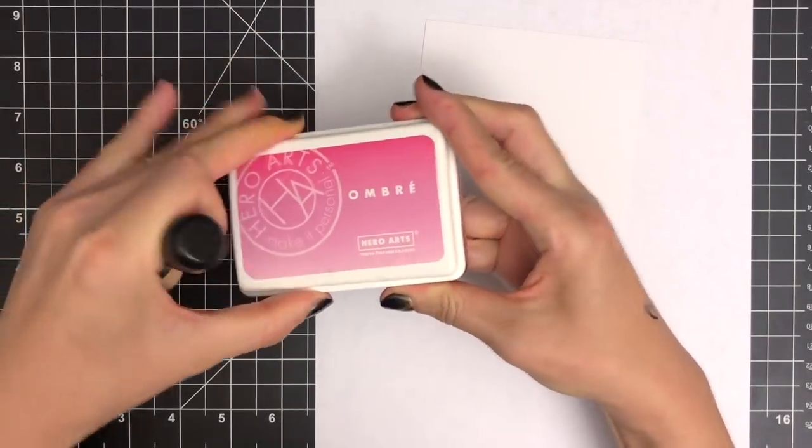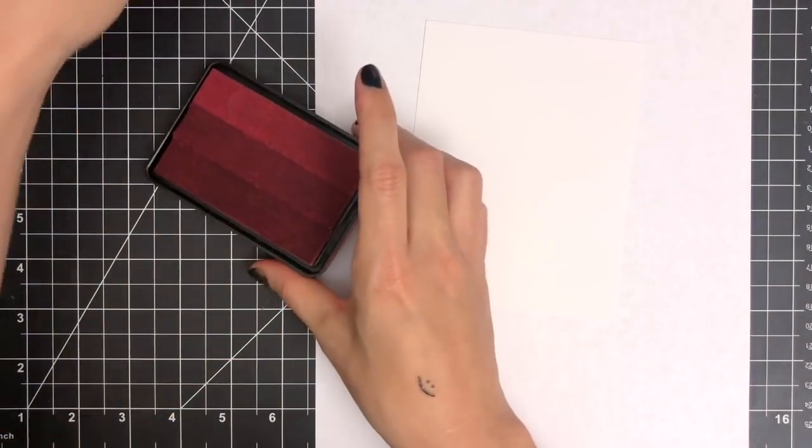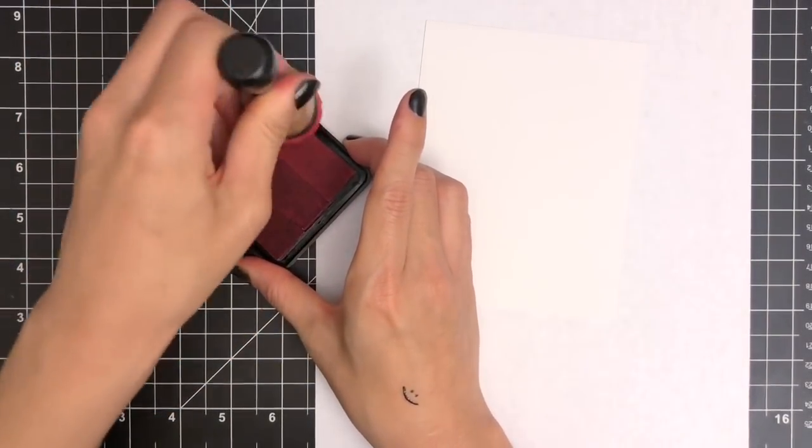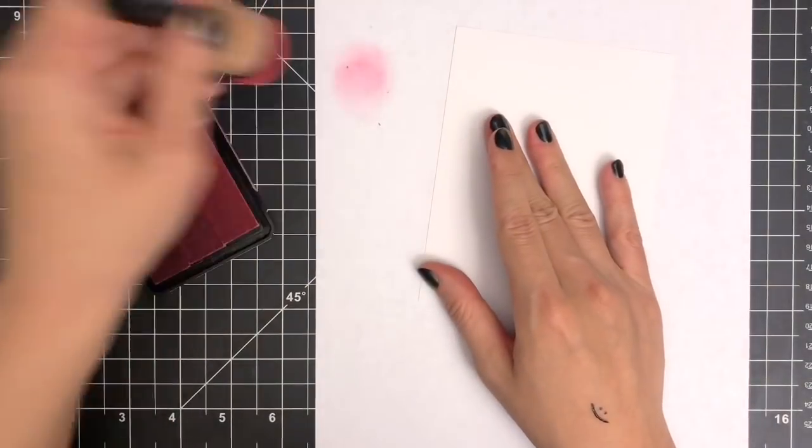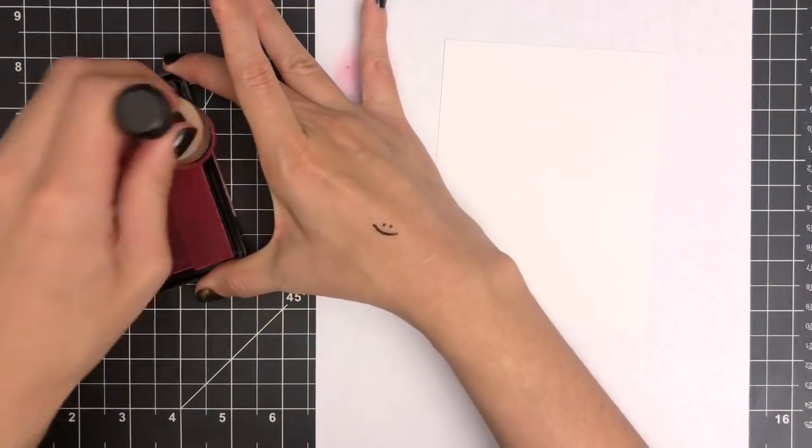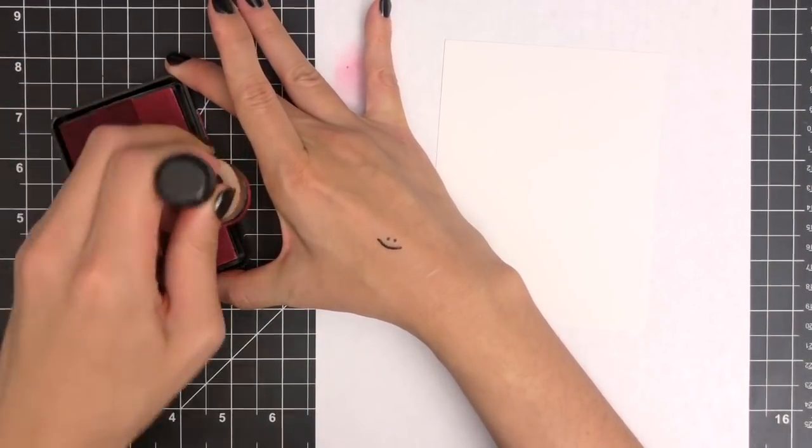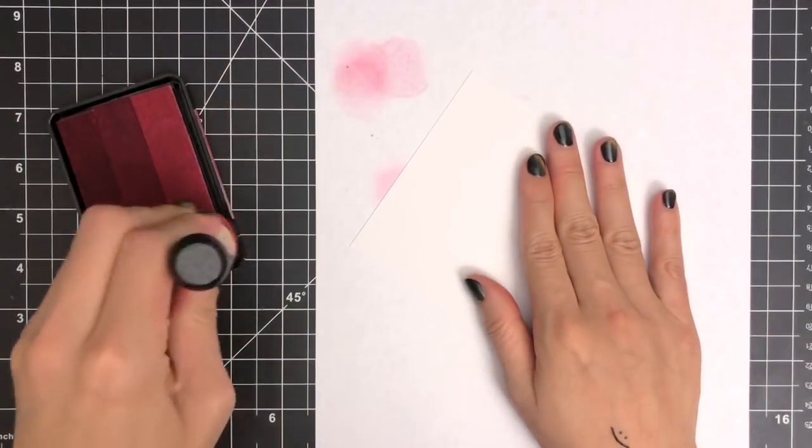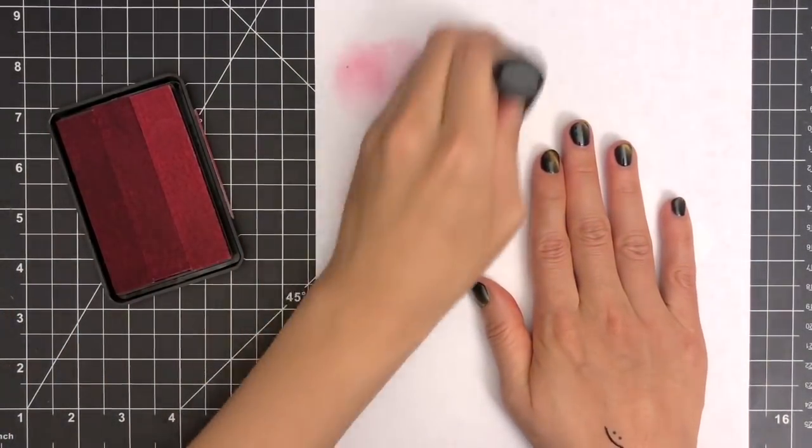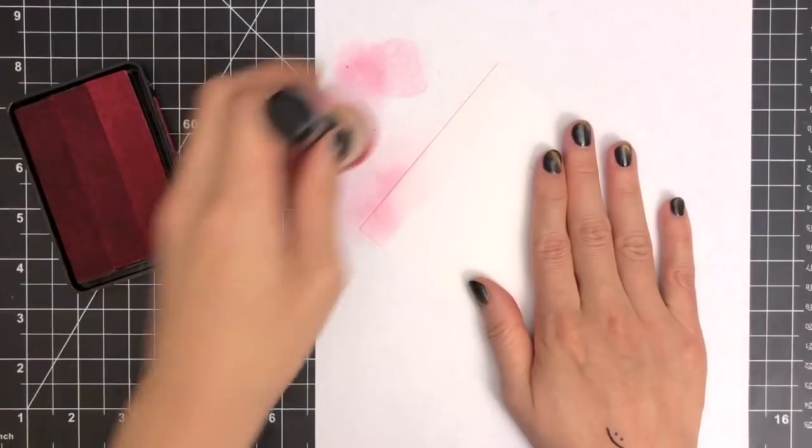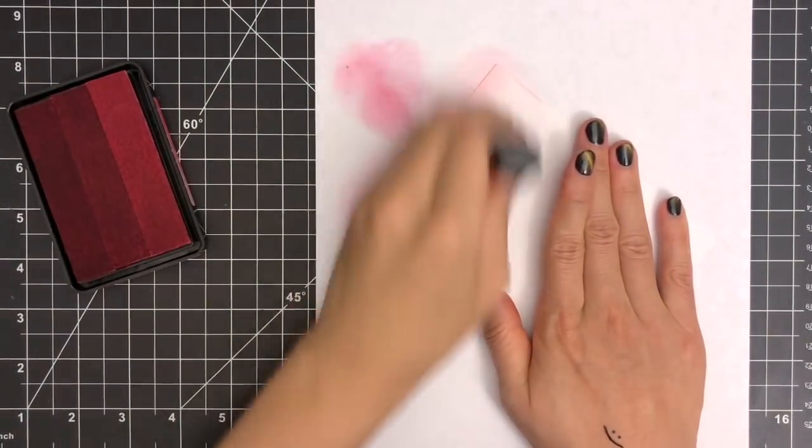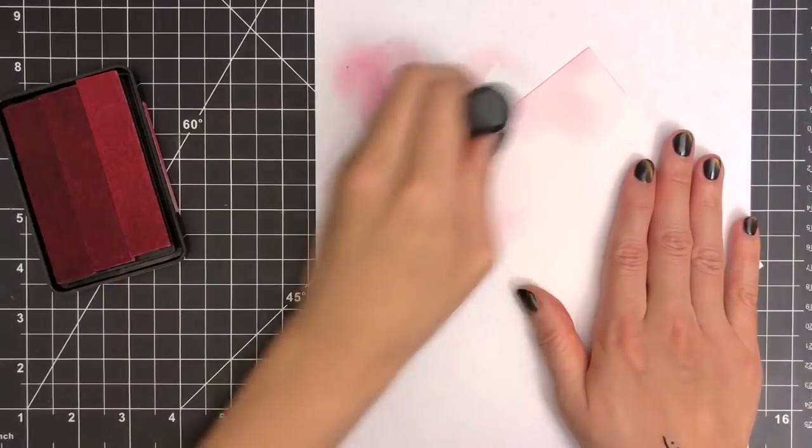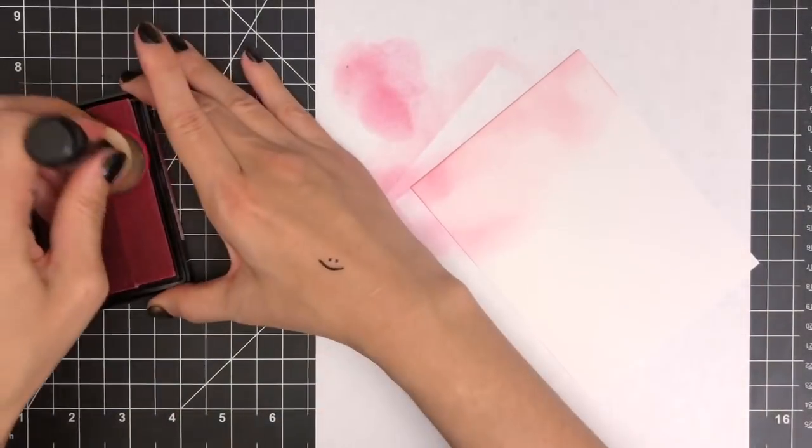I'm going to start ink blending using Hero Arts Pink to Red Ombre Ink and mini blending tool. I'm tapping color off of the paper first before adding it to my paper directly to prevent from having harsh lines. Then I'm inking toward the top of my white panel with light color first. I placed a piece of print paper underneath my project to protect my work area.